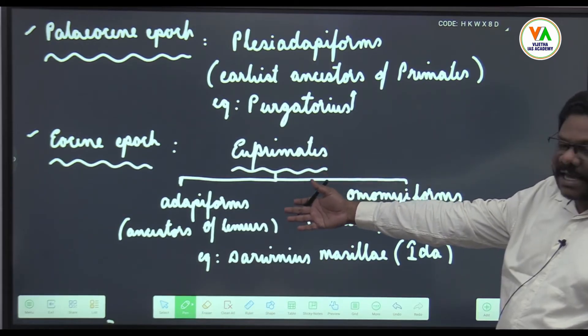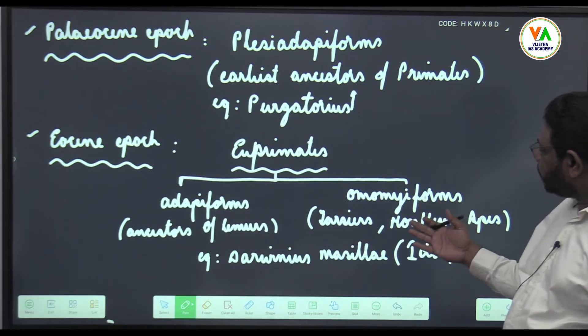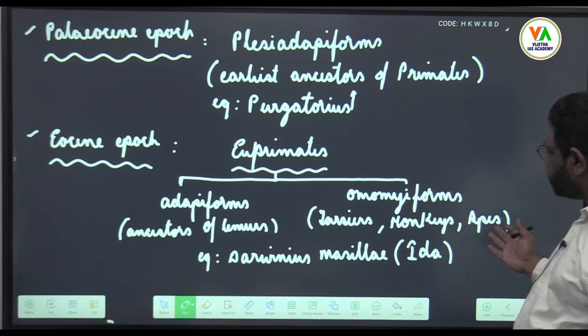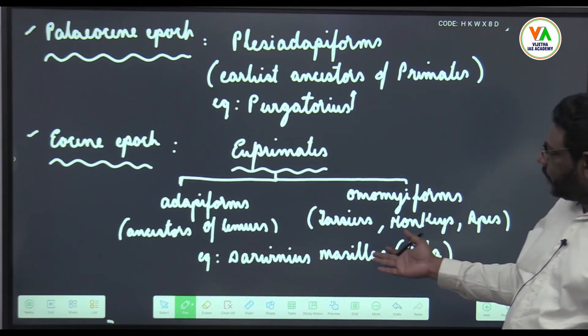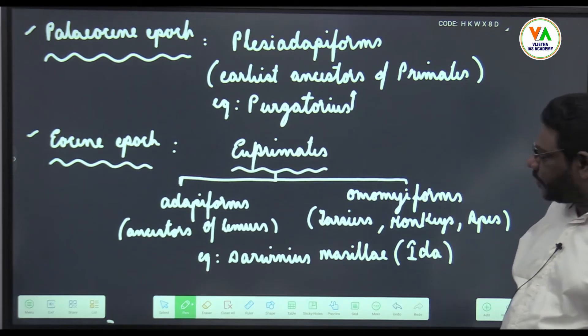Adapiforms are the ancestors of lemurs. Omomiforms are the ancestors of tarsiers, monkeys and apes. One form example is Darwinus mesillae which is also popularly known as Ida.